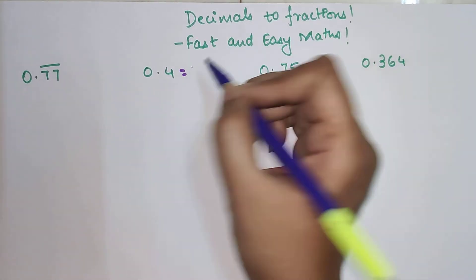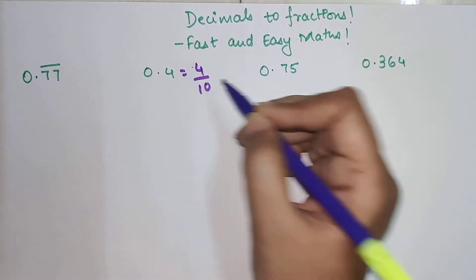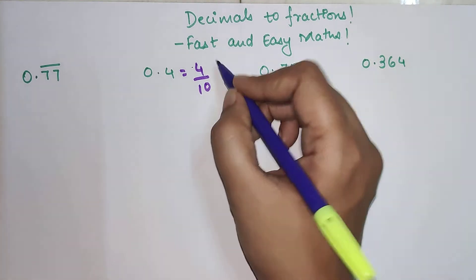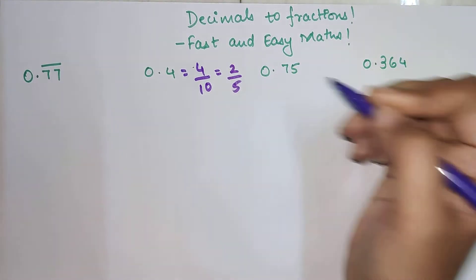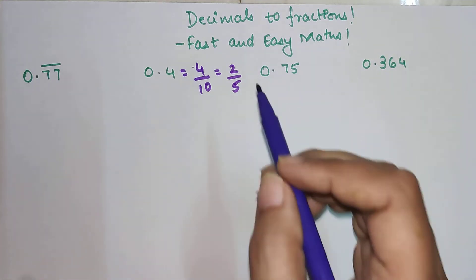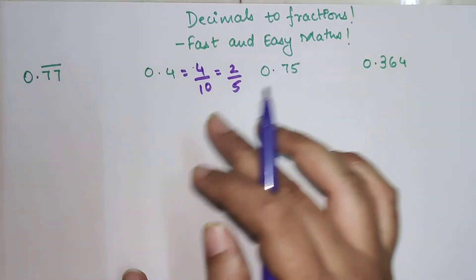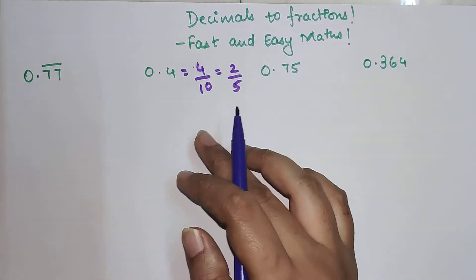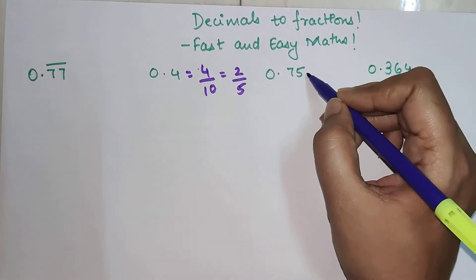Whenever you have something like this, all you have to do is write this in terms of fraction, which is 4 upon 10. Then if you can simplify this further, please simplify. So this can be written as 2 upon 5. The final answer for 0.4 is 2 upon 5. 4 upon 10 is also your answer, but the accepted answer is always the one which is in the lowest form of fraction.